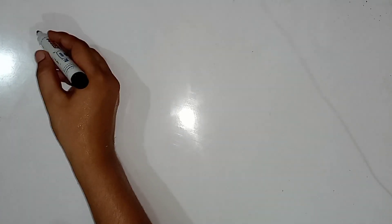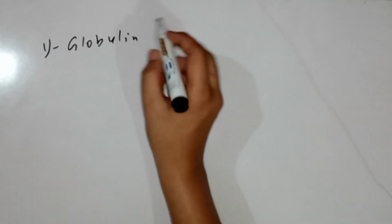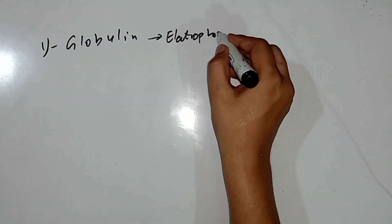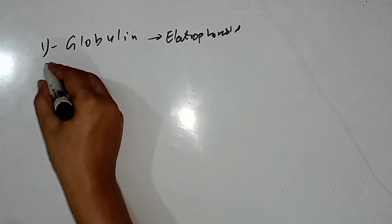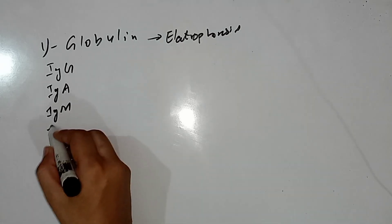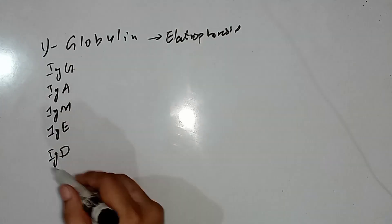In this video we are going to begin with our lecture on immunoglobulins. Immunoglobulins are basically plasma proteins which belong to the gamma globulin band of electrophoresis. They principally include five classes: IgG, IgA, IgM, IgE, and IgD — you can remember it by 'GAMED'.